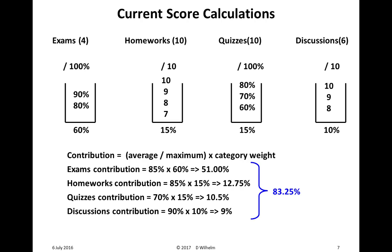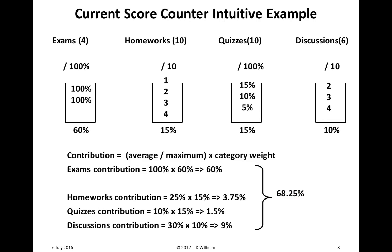Summing those up, the current score of this student is 83.25%. That passes a sanity check — the average exam score is 85%, the student didn't do quite as well on the quizzes, so 83% sounds about right.